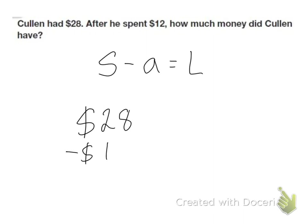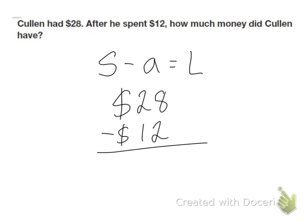Some went away, he spent $12. So now I know how much I have left. So 28 minus 12. 8 minus 2 is 6. 2 minus 1 is 1. So he has $16 left.